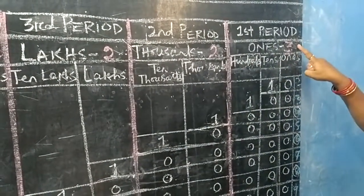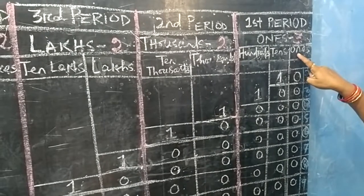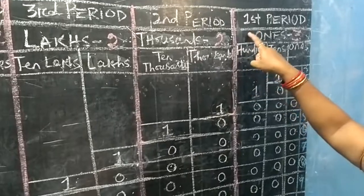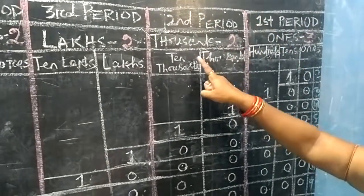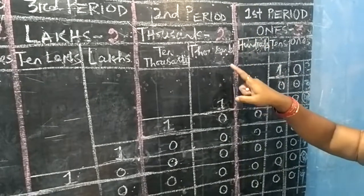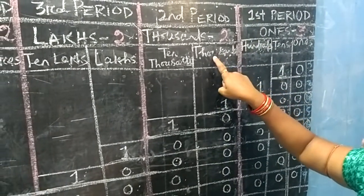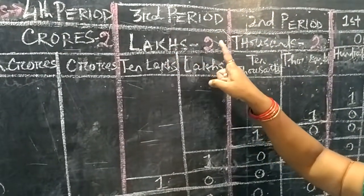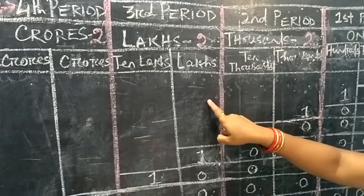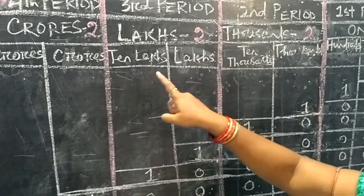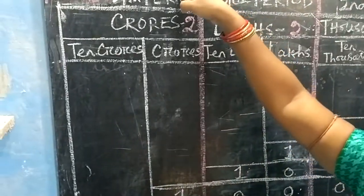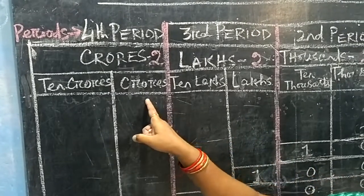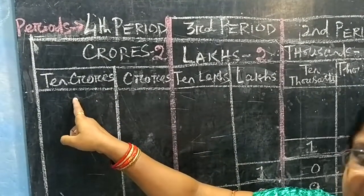In the 1st period there are 3 digit places: 1s is 1st place, 10s is 2nd place, 100s is 3rd place. In the 2nd period there are 2 digit places: 1,000s is 1st place and 10,000s is 2nd place. In the 3rd and 4th periods there are also 2 digit places each.